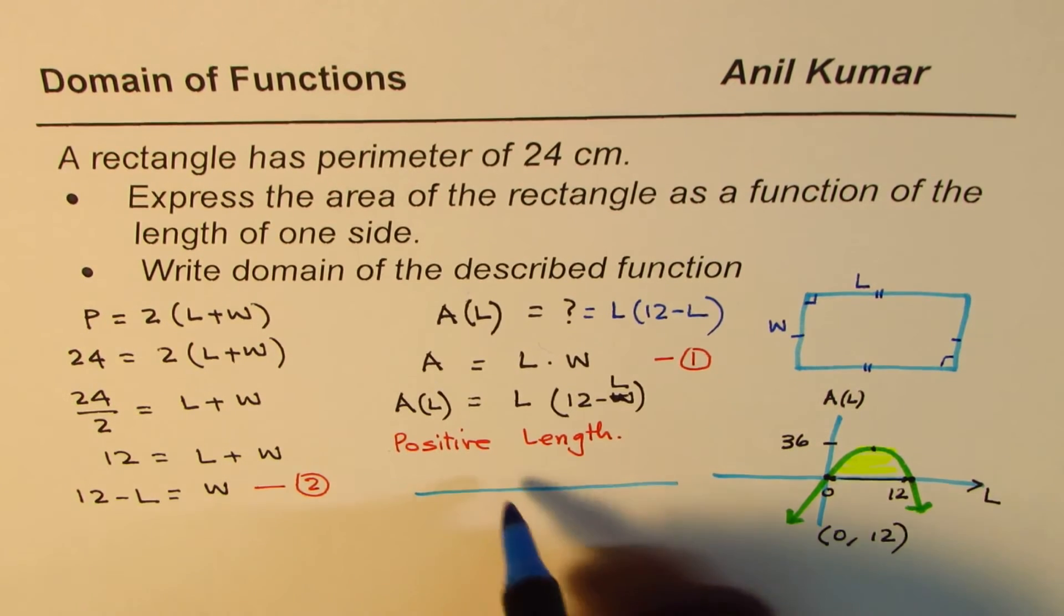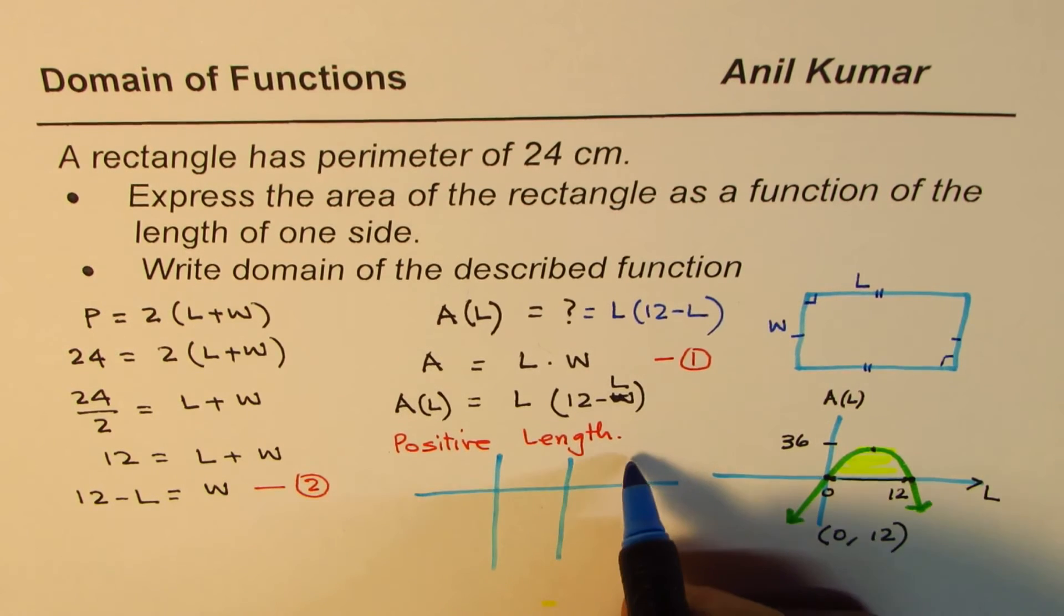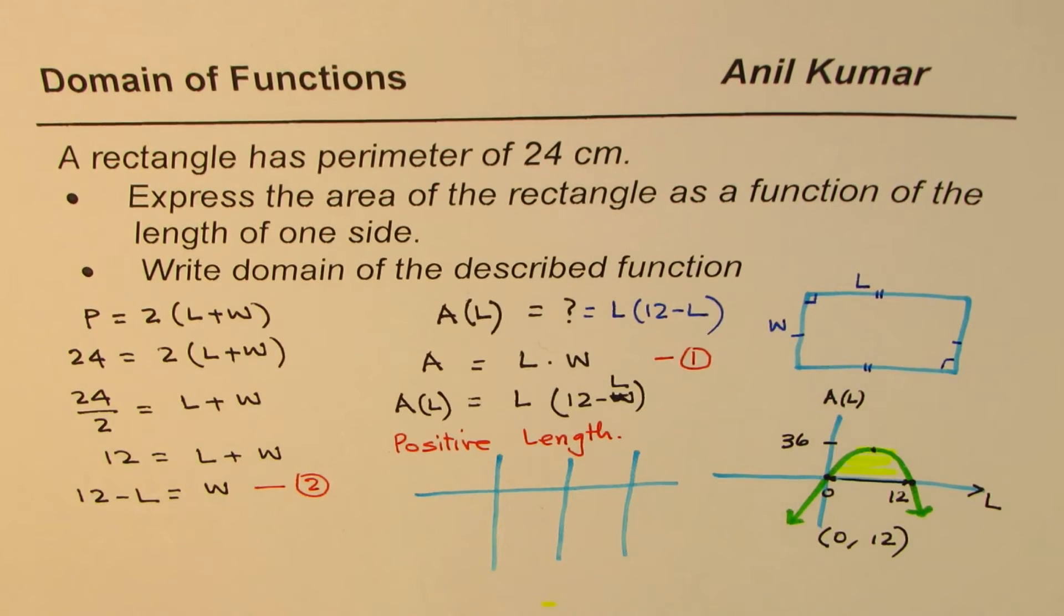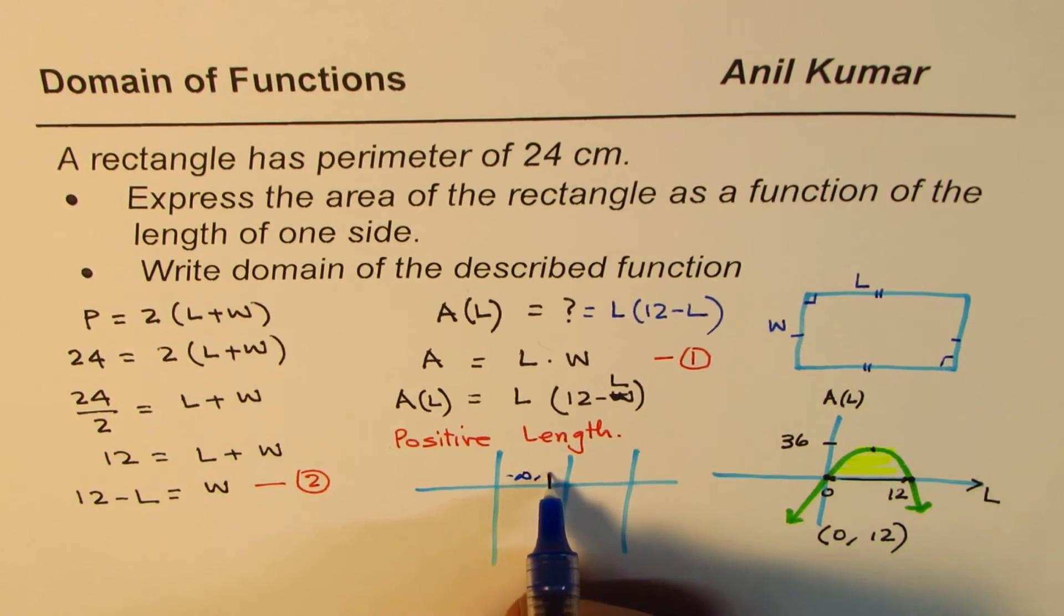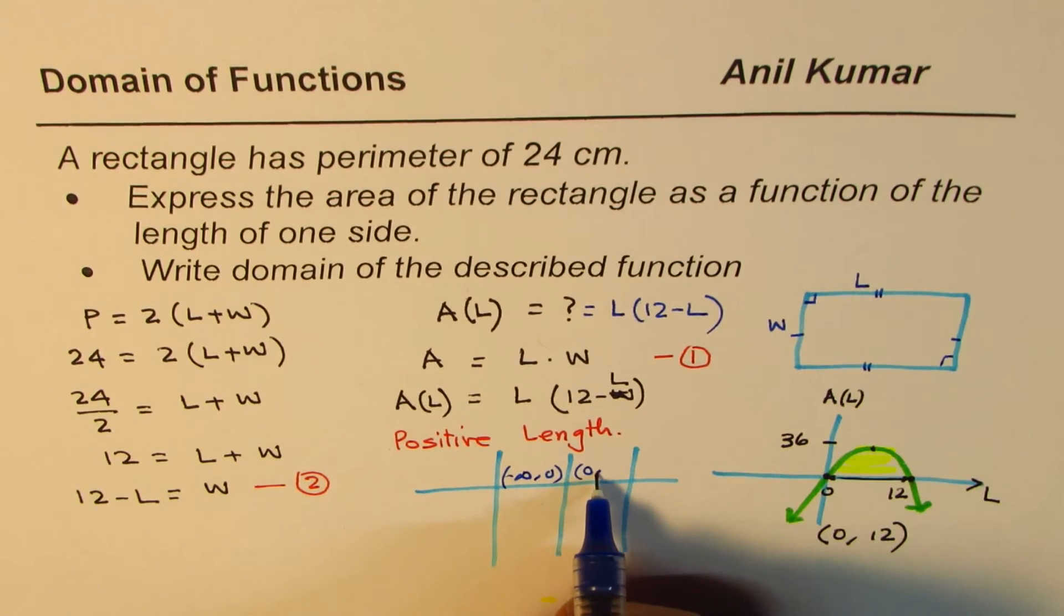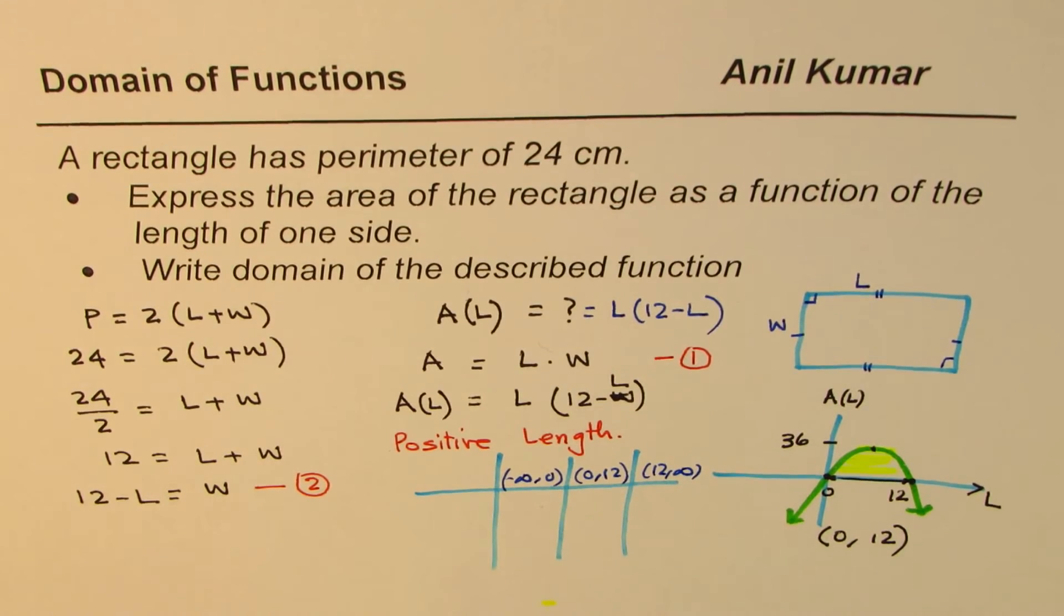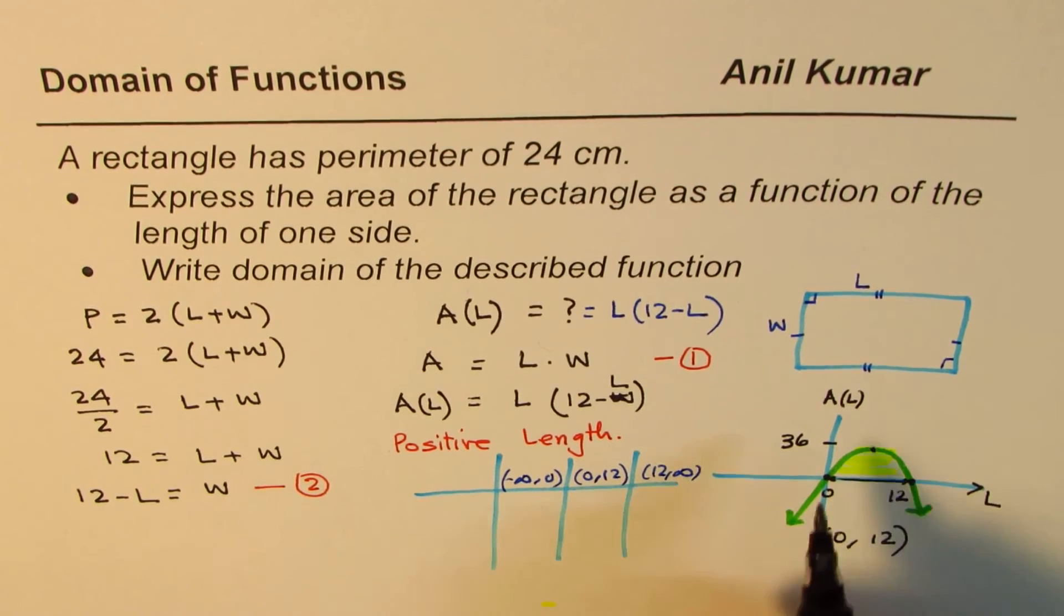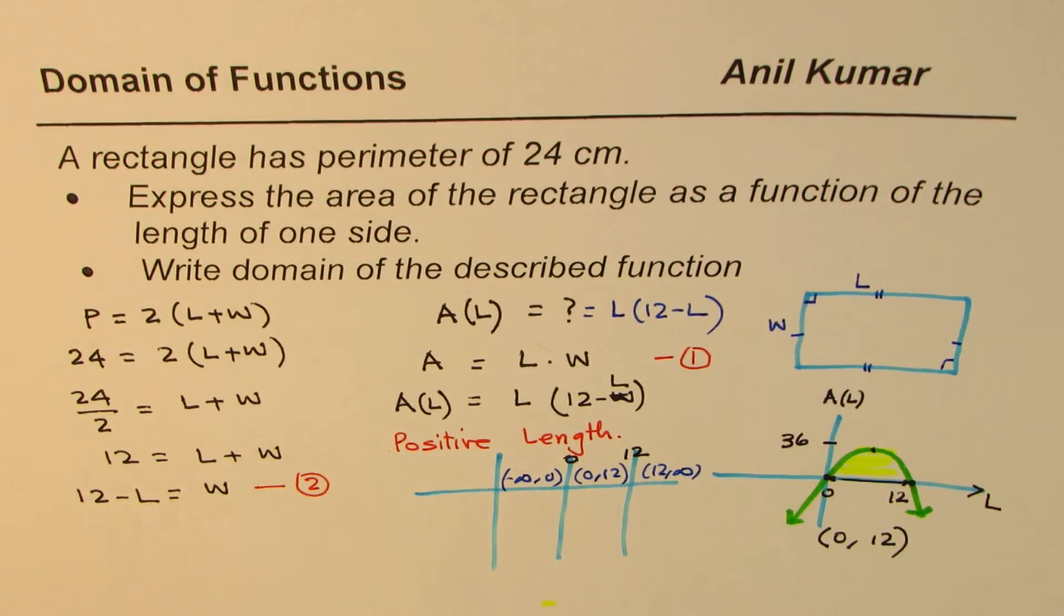The other method is the interval method. Let me discuss that also. So intervals. These two zeros, as you can see, divide the plane into three intervals. This is one interval, which is from minus infinity to 0. Another one from 0 to 12, and then we have from 12 to infinity. These intervals we have got as a result of zeros at 0 and 12.